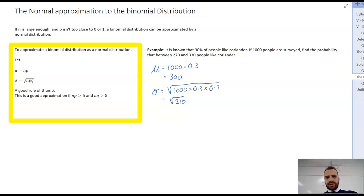So from here, I can now just draw this as a normal distribution. So a mean of 300, a standard deviation of the square root of 210. And I want to find the probability that between 270 and 330 people like that thing. So I'm finding the probability that 270 is less than X, which is less than 330.